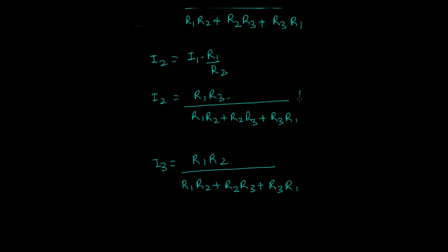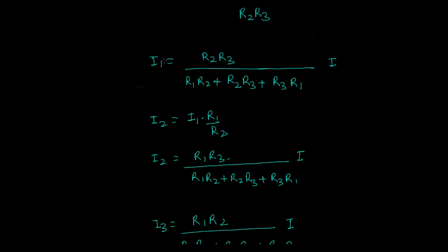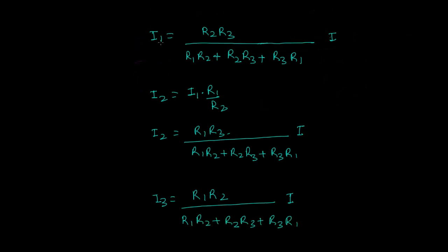There is a clear pattern here. Whenever you are finding i1, the resistor r1 is missing from the numerator — the numerator is the product of the other two resistors. In the denominator, it is the sum of all products of any two resistors taken at a time.